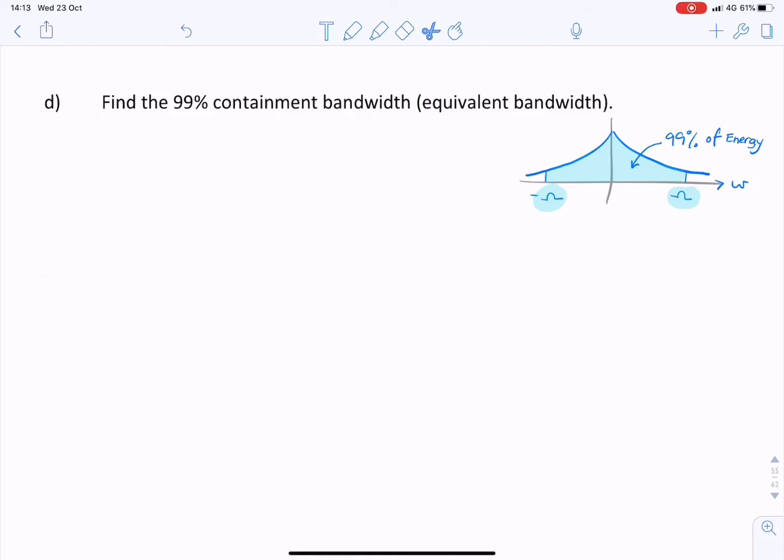The question is now asking for the 99% containment bandwidth. That is, what value for ω, uppercase omega, will contain 99% of the energy? So the 99% containment bandwidth, the answer to that will be ω. So what the question is asking for is the value of frequency.